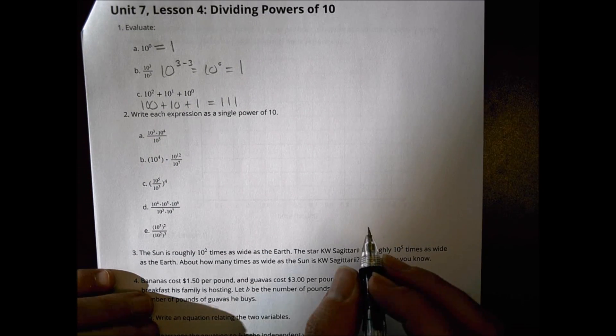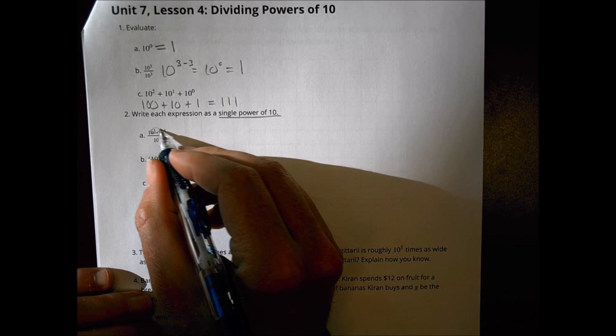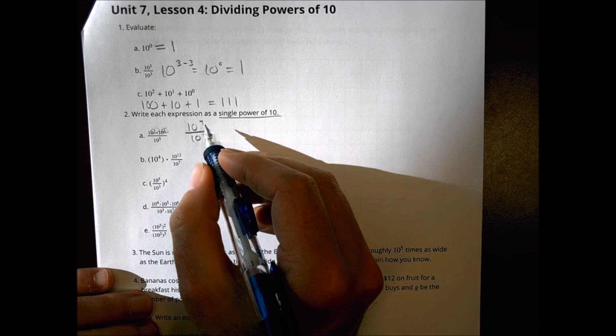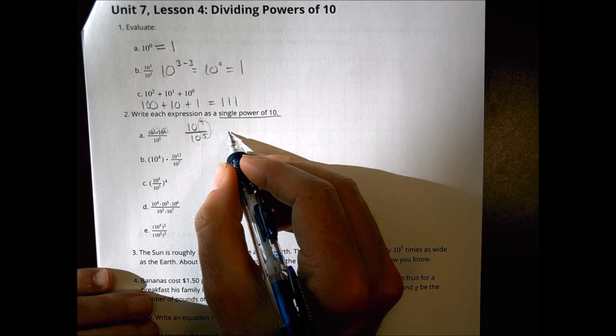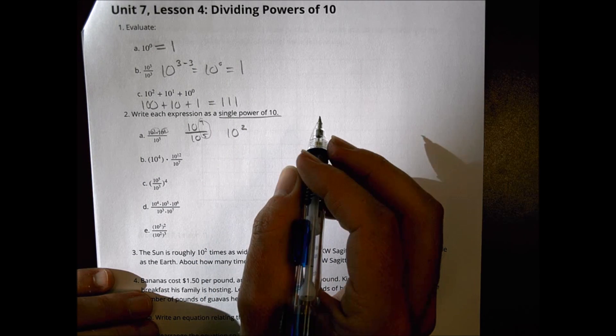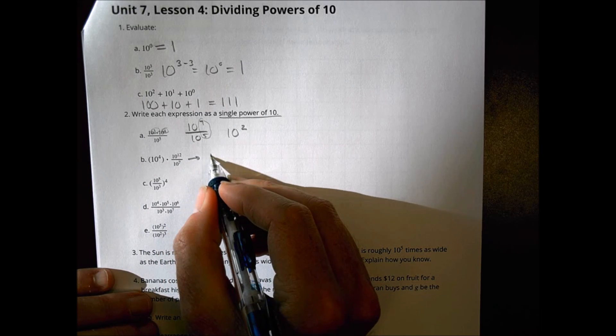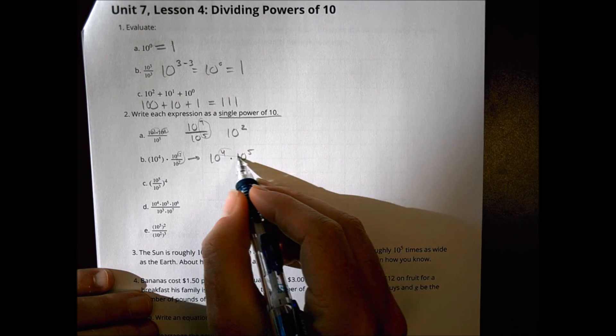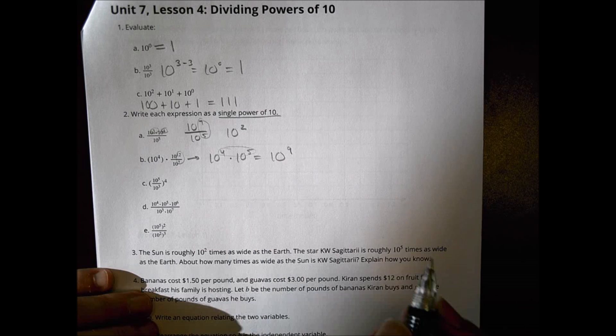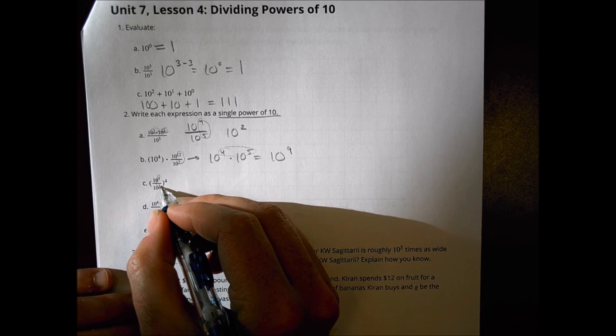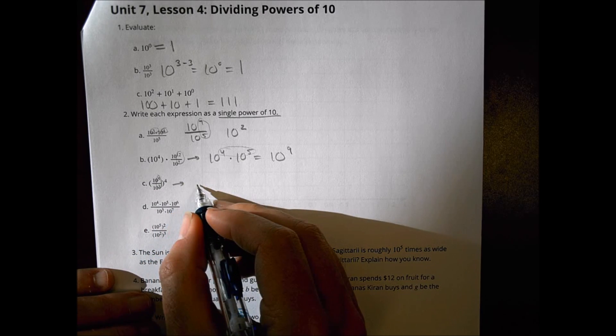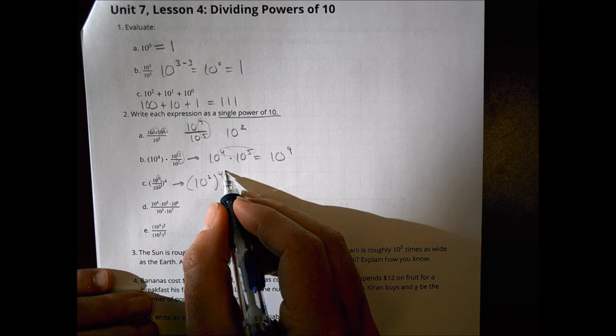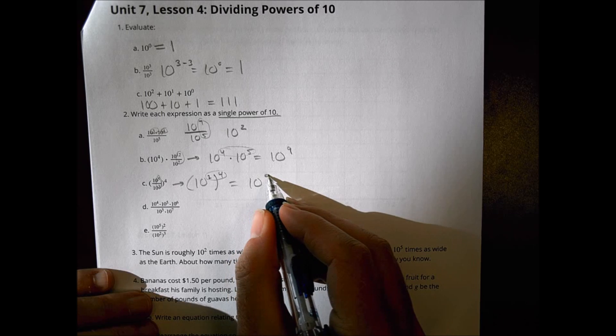Okay. Number two. Let's rewrite this expression as a single power of ten. So on top, I have three plus four is seven. So I have ten to the seventh over ten to the fifth. Now I can do seven minus five and that becomes ten to the second. Here we have ten to the fourth. That stays the same. Times twelve minus seven is ten to the fifth. We can add those up and that becomes ten to the ninth. Here, let's do this part first. We have ten to the fifth divided by ten to the third. That becomes ten. Five minus three is two squared. And that's all to the fourth power. We're going to multiply those together. So that becomes ten to the eighth power.